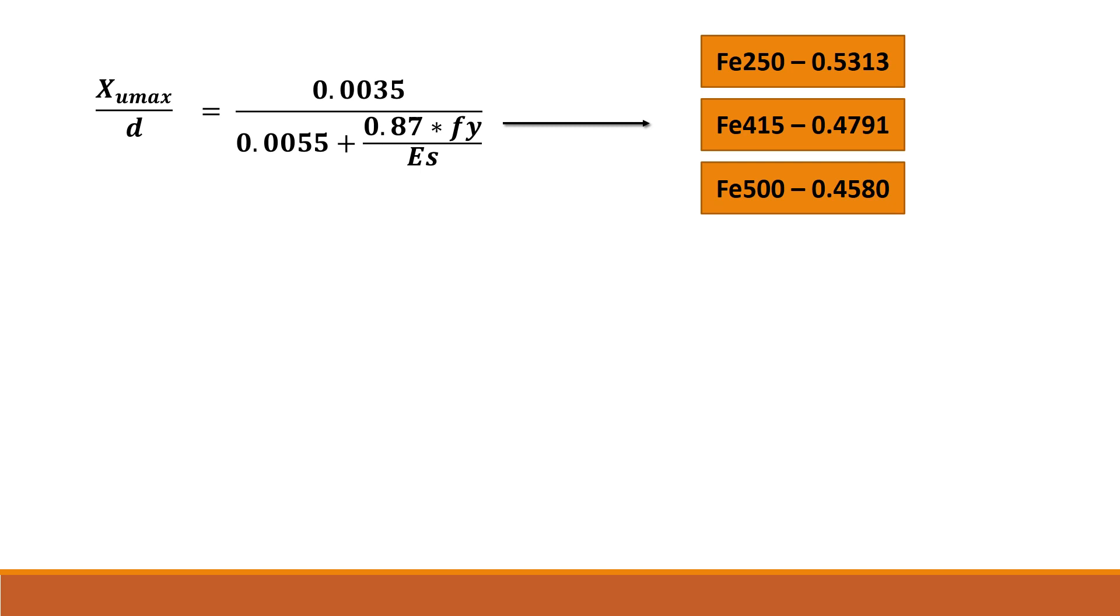If XU is less than XUmax, the section is under-reinforced and the section would start to yield with the yielding of steel and later with the cracking in concrete.